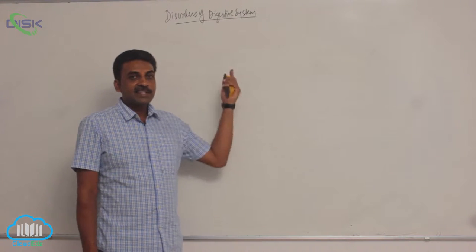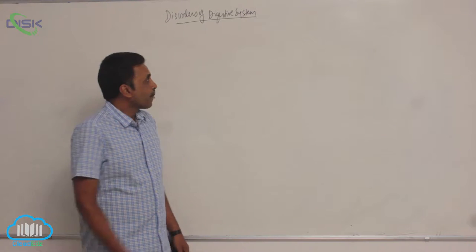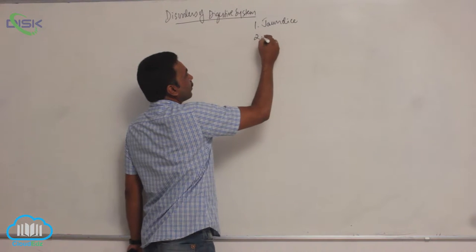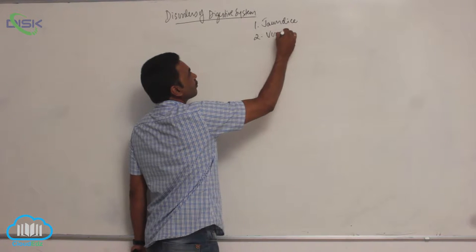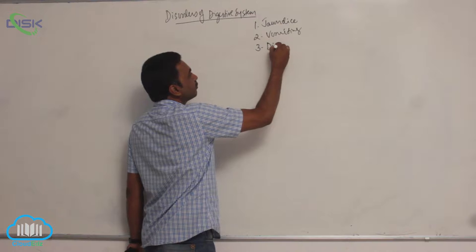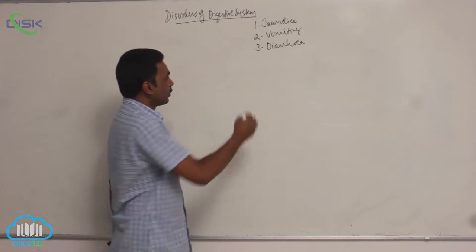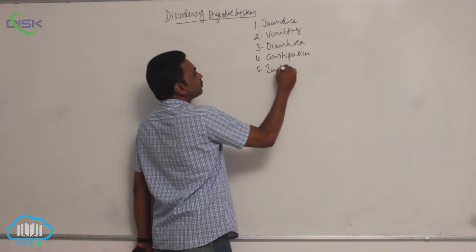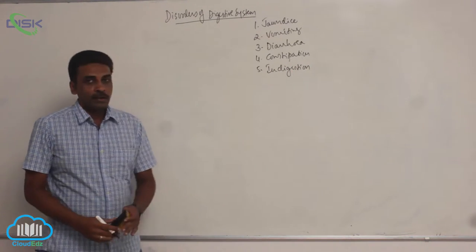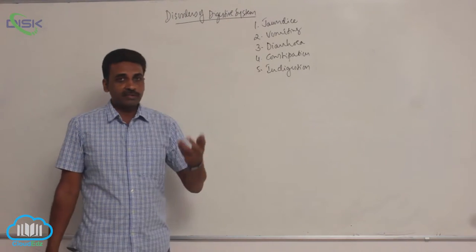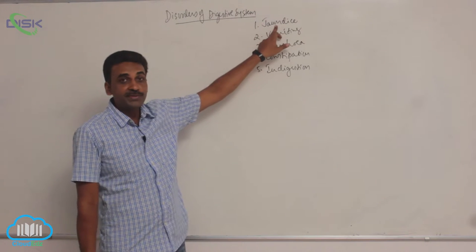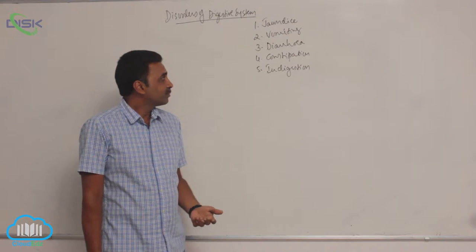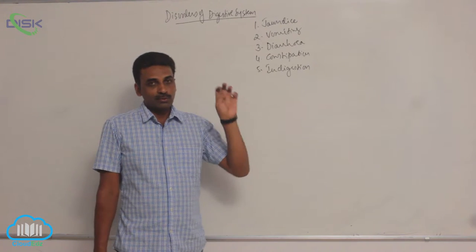Let us discuss the disorders of the digestive system. The disorders of the digestive system include jaundice, vomiting, diarrhea, constipation, and indigestion. We are trying to understand the disorders of the gut or digestive system, and we will discuss them one after another.